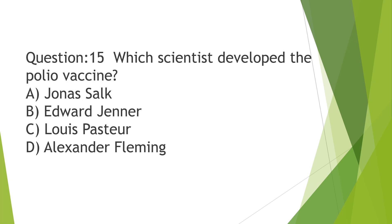Question number 15: Which scientist developed the polio vaccine? Option A, Jonas Salk. Option B, Edward Jenner. Option C, Louis Pasteur. Option D, Alexander Fleming. And the right answer is Option A, Jonas Salk.